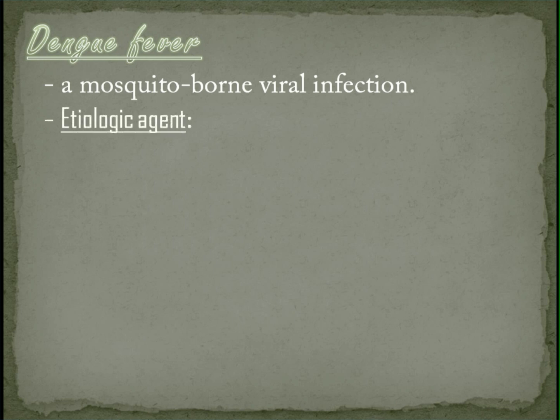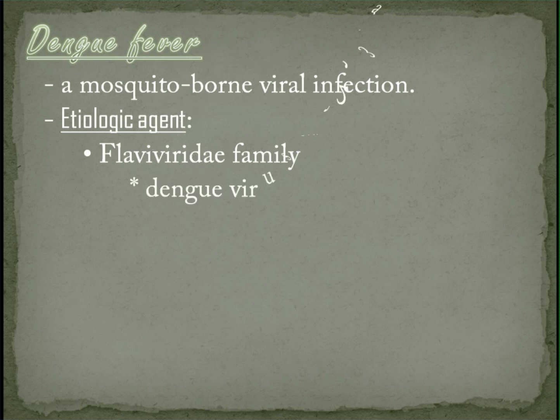Etiologic agent. Dengue is caused by a virus of the Flaviviridae family. There are four distinct but closely related serotypes of the virus that cause dengue: Dengue virus 1, 2, 3, and 4.